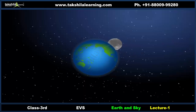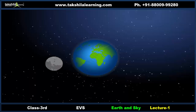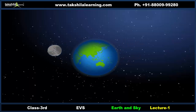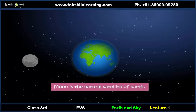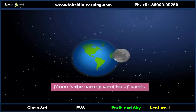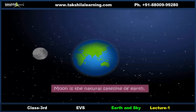A natural satellite is a celestial object that revolves around a planet. It is natural and not man-made. The Moon is the natural satellite of Earth and it revolves around the Earth.